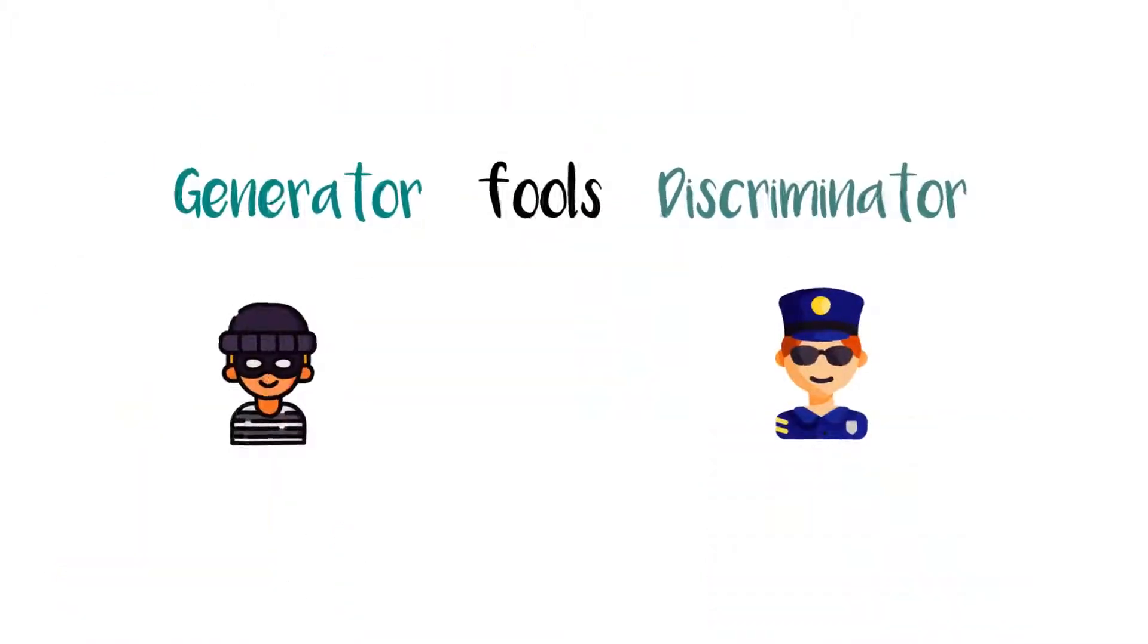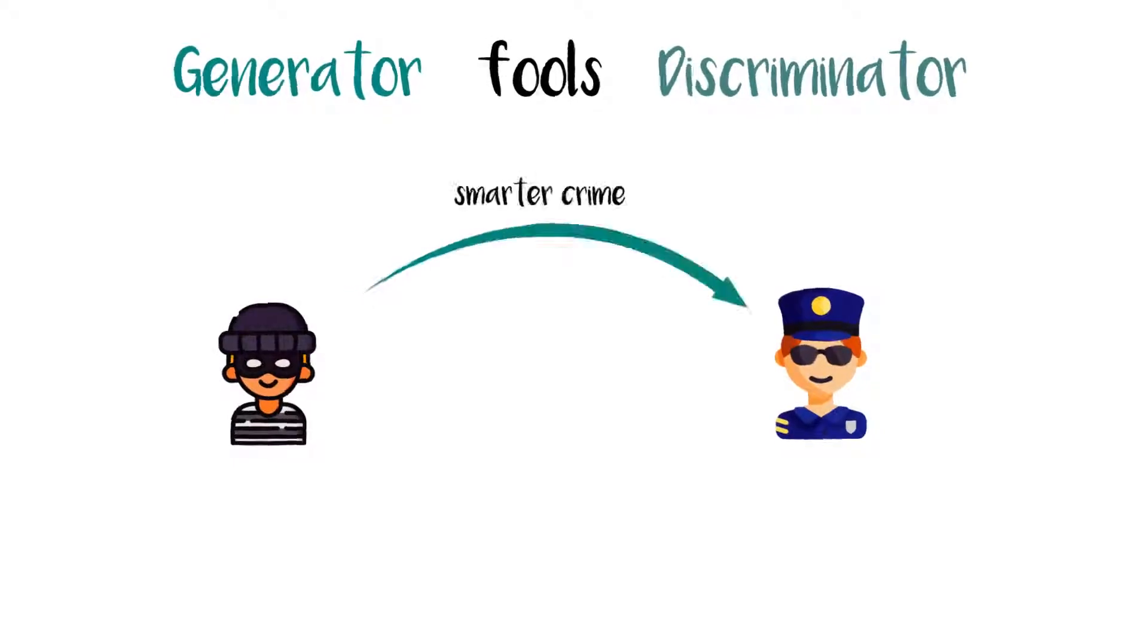The objective function for the generator is to increase the chance of fooling the discriminator. Over time, the thief becomes a better thief and the cop becomes a better cop, unless the thief becomes really smart. In which case, the discriminator will be eternally confused.